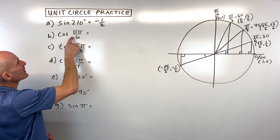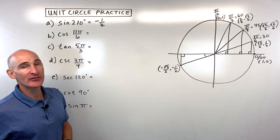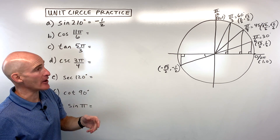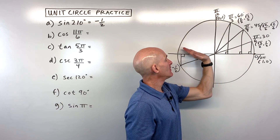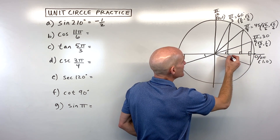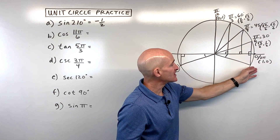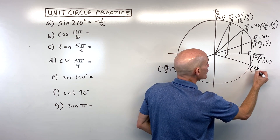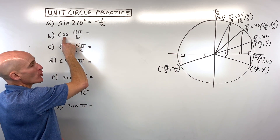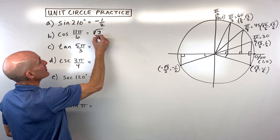Letter B: cosine of 11π/6. Think of this as 1 and 5/6 π — go 1π (180°) plus another 5/6 of π. Drop a perpendicular to the x-axis; the reference angle is 1/6 π, which is 30 degrees. The coordinates are √3/2, negative 1/2 — y is negative because we're going down. Cosine is the x-coordinate, so the answer is √3/2.